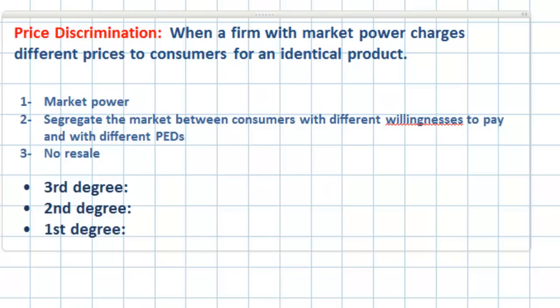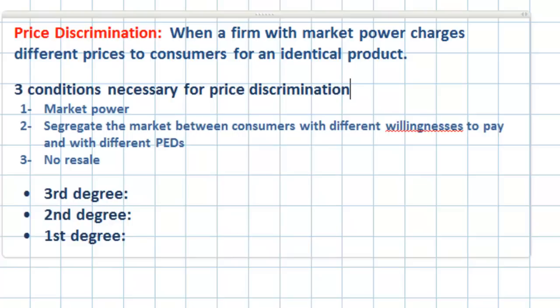So these are the three conditions necessary for price discrimination to occur: if a firm has market power, is able to segregate the market based on different willingness to pay and price elasticities of demand among consumers, and if resale is not possible from a consumer who paid a lower price to one who might otherwise pay a higher price, then a firm may be able to price discriminate.